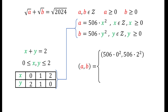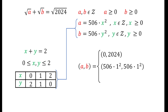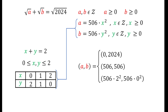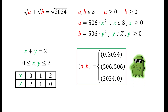Substituting back into a = 506x² and b = 506y²: when x = 0 and y = 2, a = 0 and b = 2024. When x = 1 and y = 1, both a and b equal 506. When x = 2 and y = 0, a = 2024 and b = 0. Those are our three pairs of solutions.